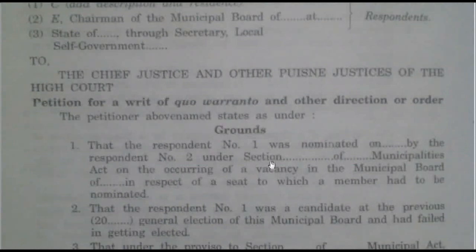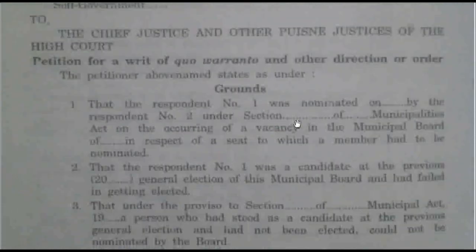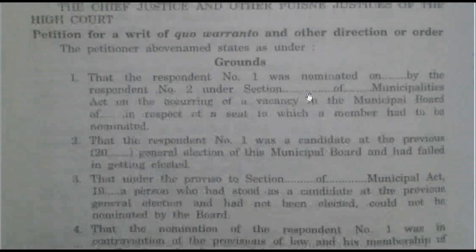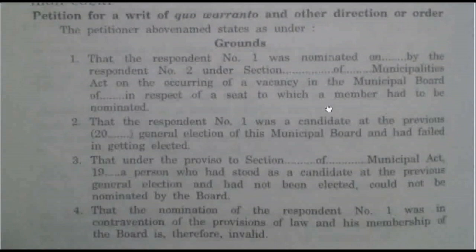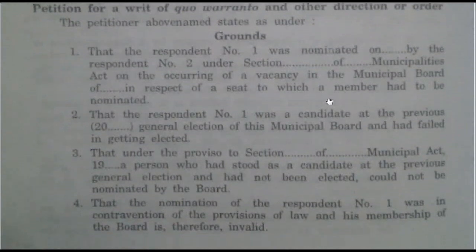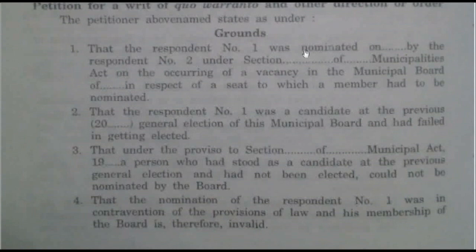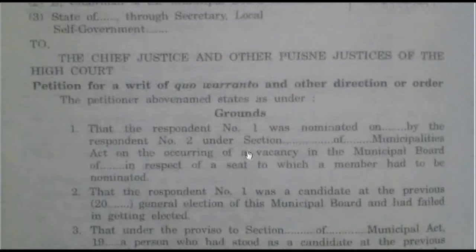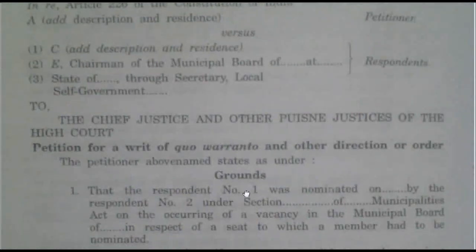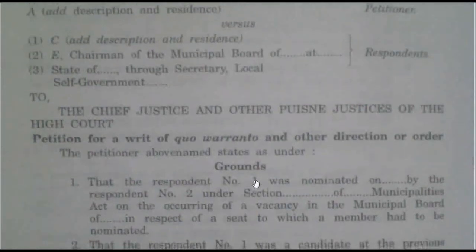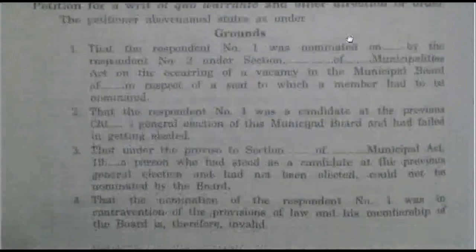When we talk about the Writ of Quo Warranto, it simply means: what is your authority? It can be issued in a government office, asking a person what their authority is for holding that post, working, and using their powers. In this example, the matter relates to a person who is not capable of holding a post under a municipality board and becoming a member of that board.